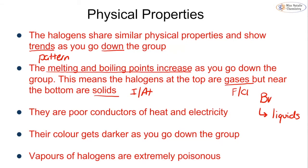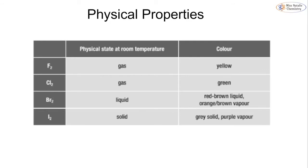The halogens are also poor conductors of heat and electricity, and the colour gets darker as you go down the group. The vapours of these halogens are extremely poisonous, so you never want to be breathing in chlorine, bromine, or iodine vapours. The physical states at room temperature from fluorine down to iodine are: gas, gas, liquid, and solid. Colours start with pale yellow, then green for chlorine, red-brown liquid or orange-brown vapour for bromine, and grey solid or purple vapour for iodine.